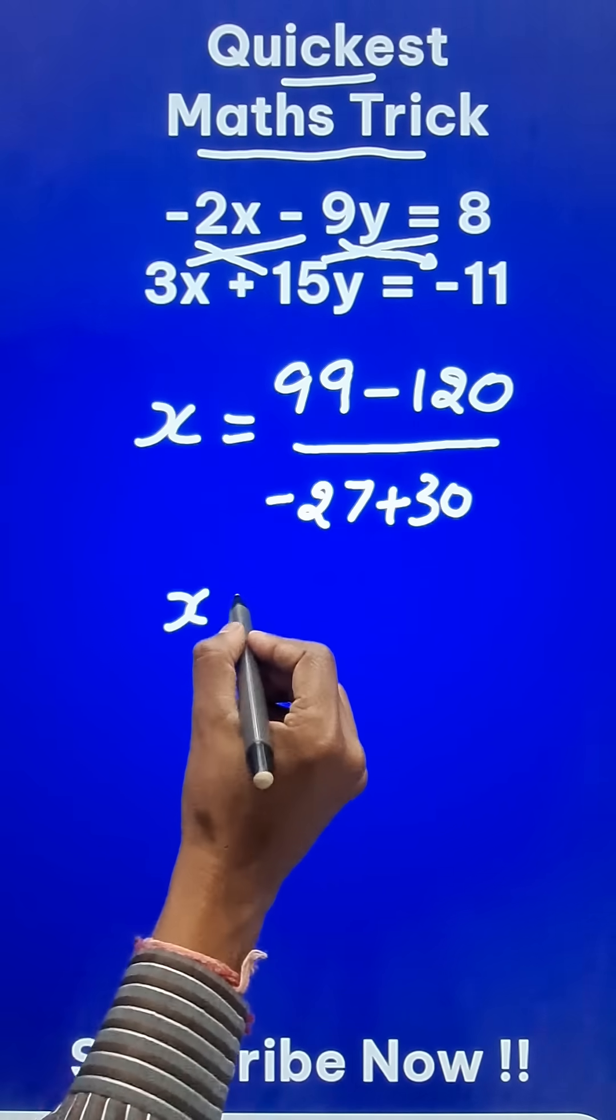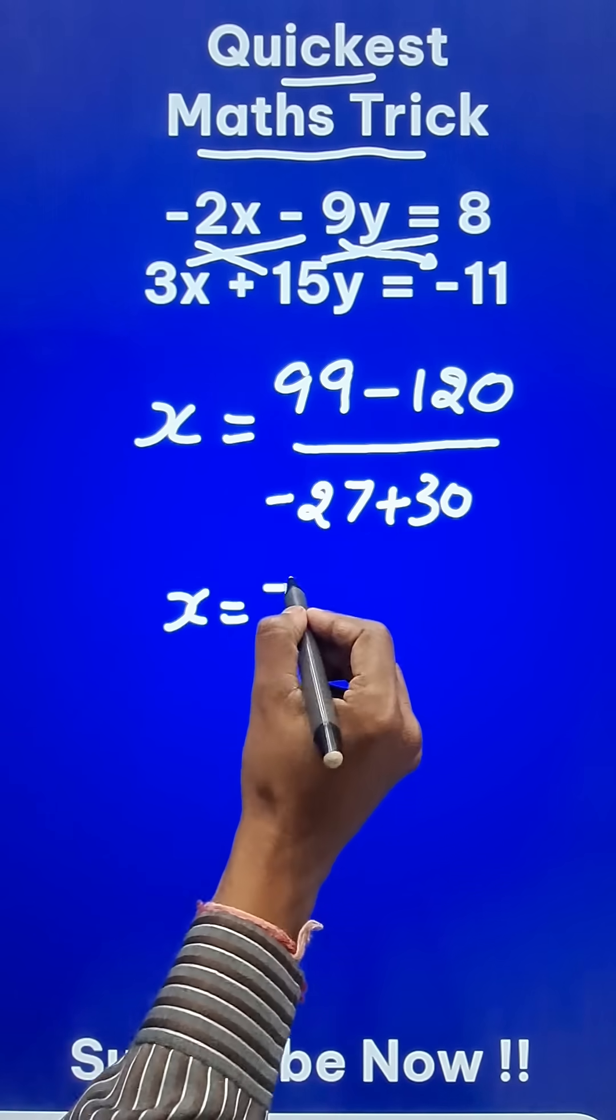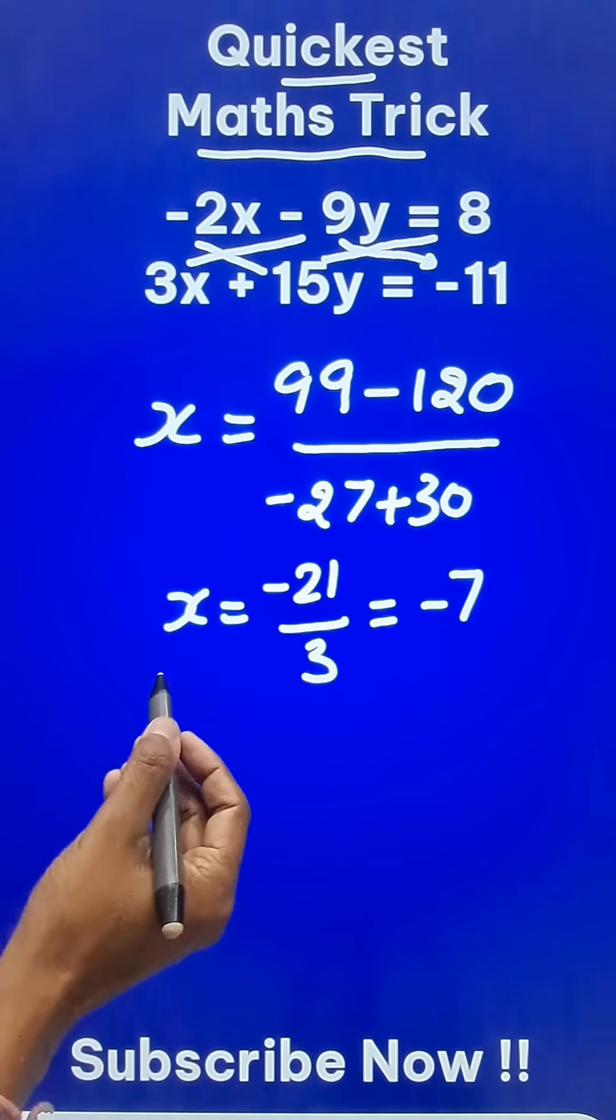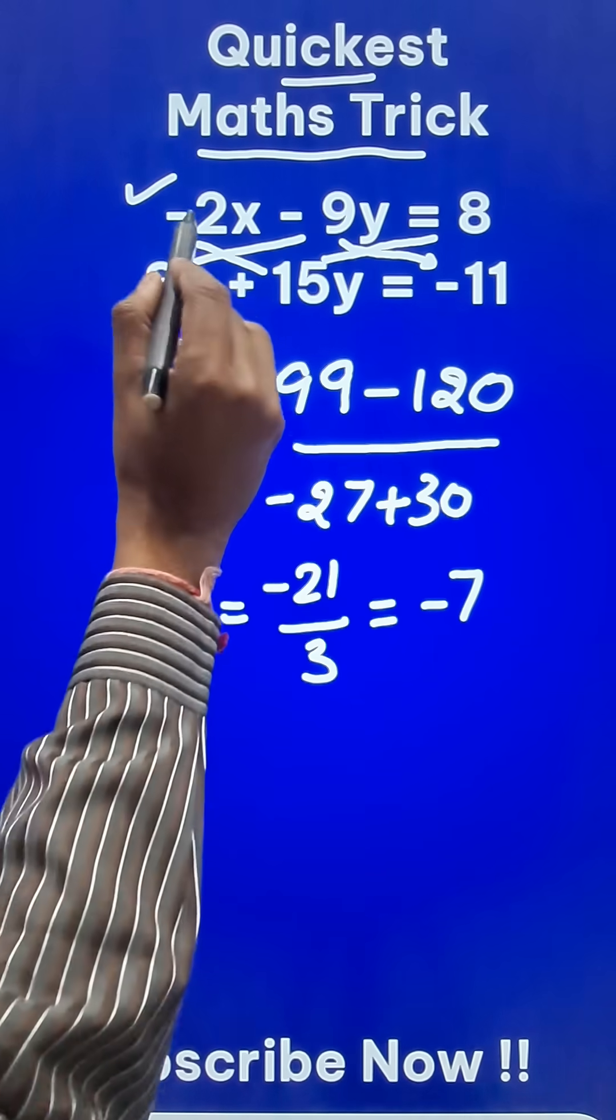And you get the value of x as this is minus 21. And in the denominator, this is 3. So minus 7 is the value of x. Now input the value of x in one of the equations.